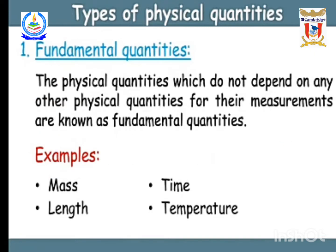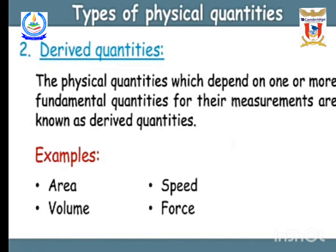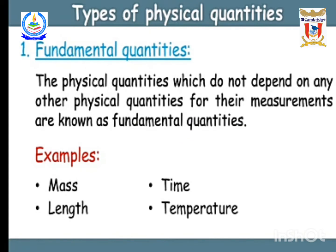There are two types of physical quantities: the first is fundamental quantity and the second is derived quantity. Fundamental quantities are physical quantities which do not depend on any other physical quantities for their measurement. They are independent quantities — for example, mass, length, time, and temperature. Their units are single units: kg, meter, second, and Kelvin respectively.